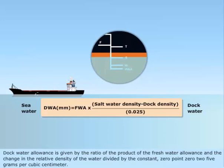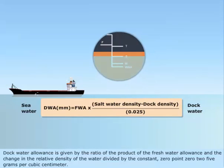Dock water allowance is given by the ratio of the product of the fresh water allowance and the change in the relative density of the water divided by the constant 0.025 grams per cubic centimeter.